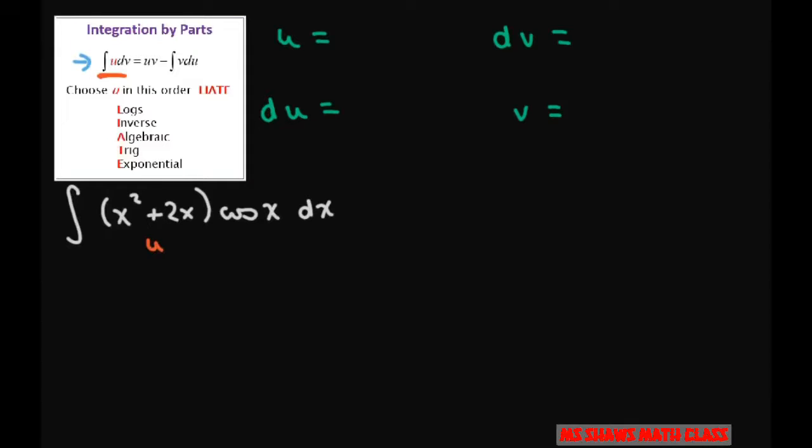I'm going to let this be u and everything else be dv. What I'm using is this mnemonic device to determine what my u is, and the first thing that comes up is algebraic. So I'm going to let that be my u.